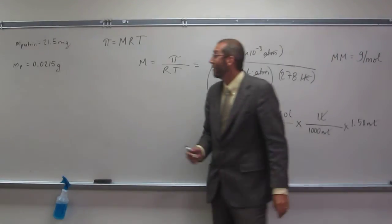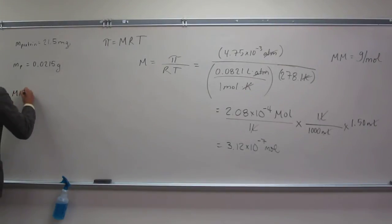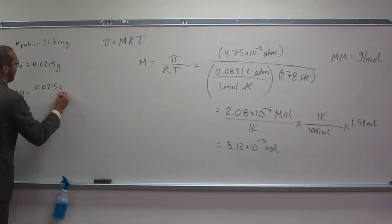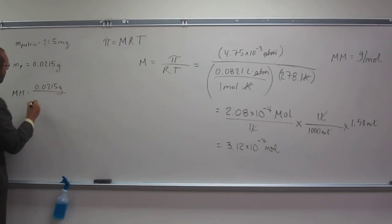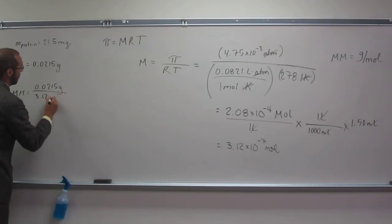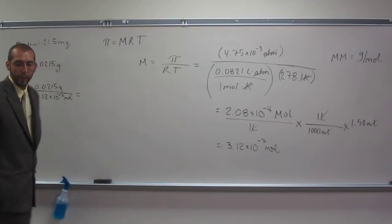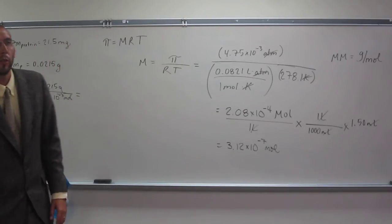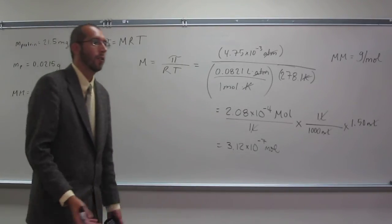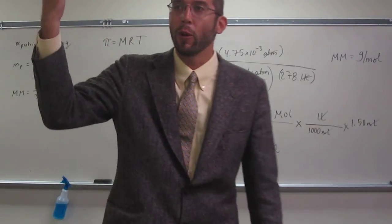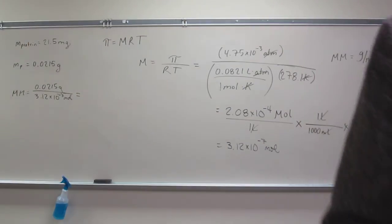Is that all we need for the molar mass? Yes. Right, so now it's just plug and chug. So molar mass equals the grams, which is 0.0215 grams divided by the number of moles, 3.12 times 10 to the negative 7 moles. And it's a protein, right, so for all you biologists, would you expect that to be a very high molar mass or a very low molar mass? Very, very high.